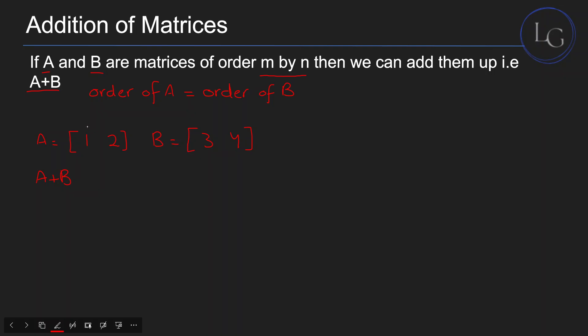The order of A is 1 by 2 - 1 row, 2 columns. The order of B is also 1 by 2, so they can be added up. How do we add up A and B? We'll add up the corresponding entries.